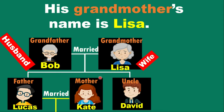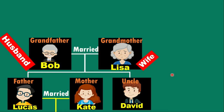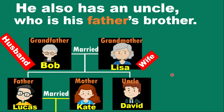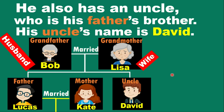His grandfather's name is Bob and his grandmother's name is Lisa. He also has an uncle, who is his father's brother. His uncle's name is David. David is the son of Bob and also the son of Lisa. David is Lucas's brother.